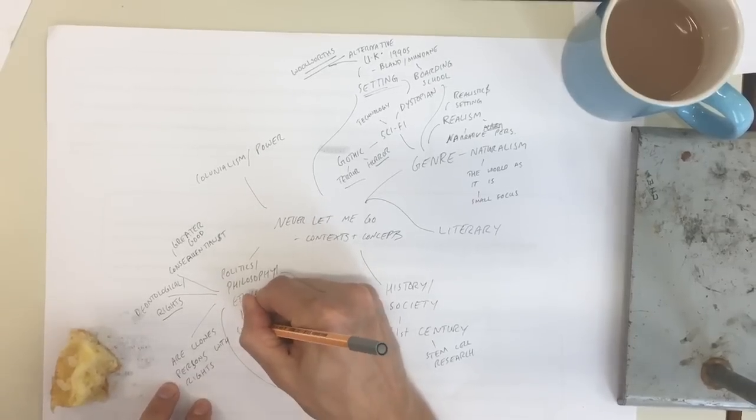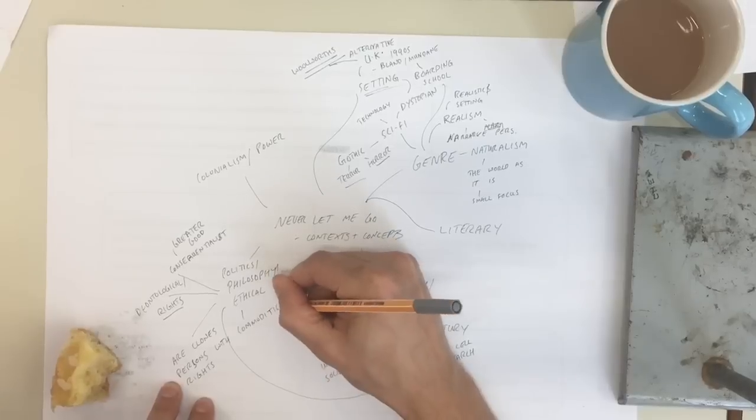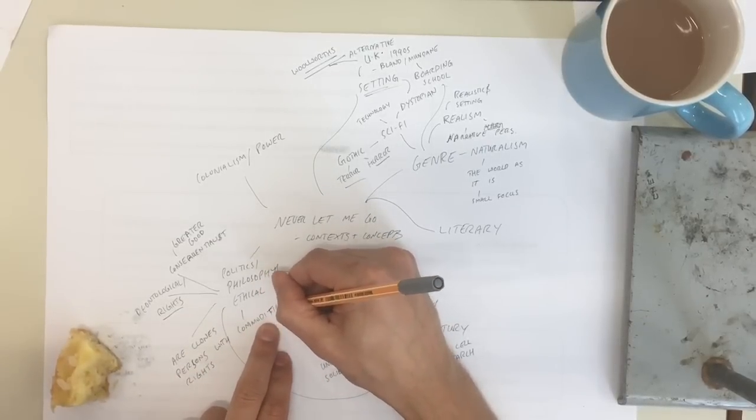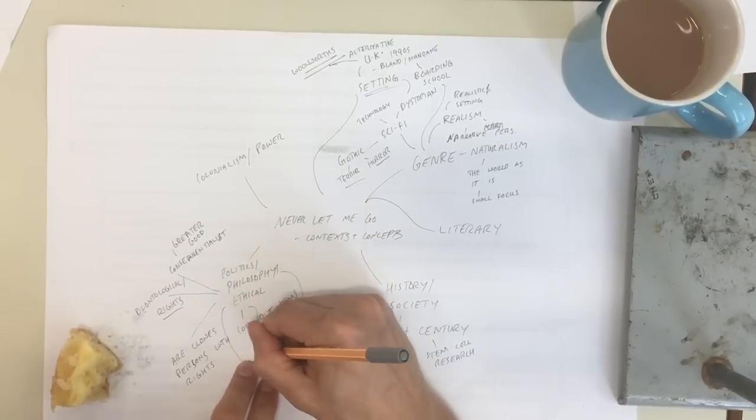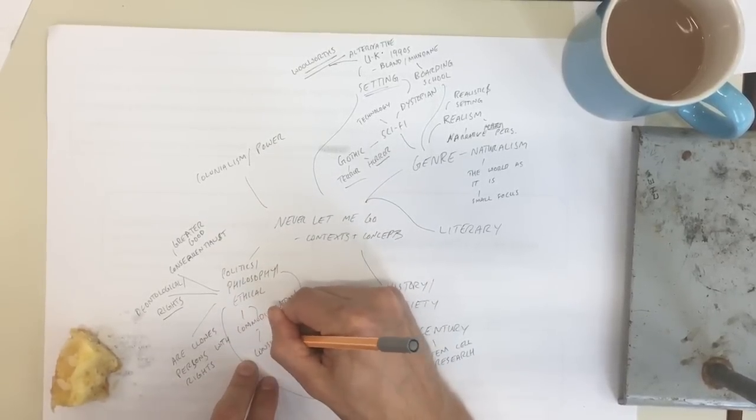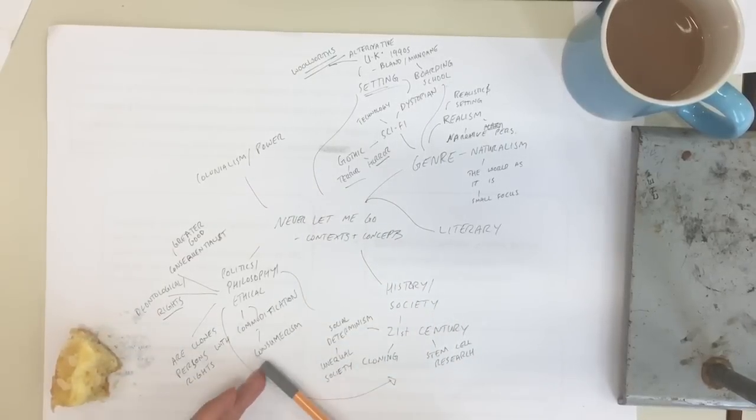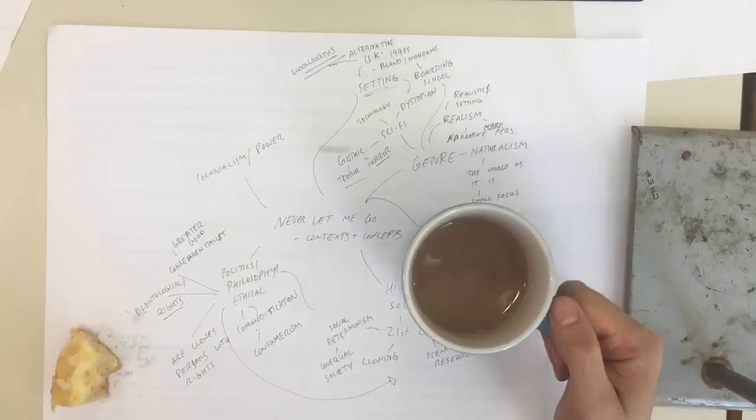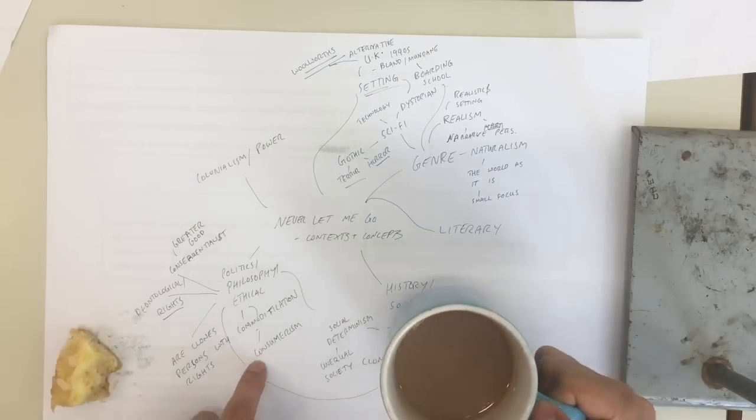That's another sort of question of 21st century existence, isn't it? Commodification, or just generally the sense of consumerism. So, literally, the clones' bodies are sort of consumed. I mean, they're even part of the system themselves, aren't they? They become what they call carers before they become donors. And so, they're all implicated in the system. And that's very much like being, even trying to be a good democratic socialist in the 21st century. You inevitably still have a credit card. You're still part of the system.